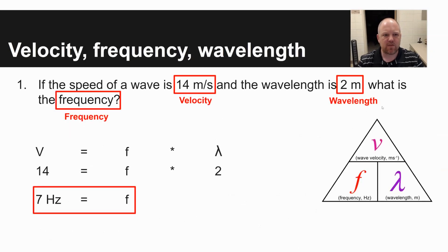The first problem involves velocity, frequency, and wavelength. It says, if the speed of a wave is 14 meters per second and the wavelength is two meters, what is the frequency of this wave? And so you're given velocity, 14 meters per second, wavelength, two meters, asked to solve for frequency. So you're going to use the triangle that's found on the right-hand side that has